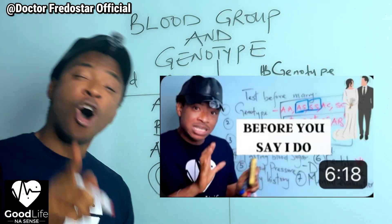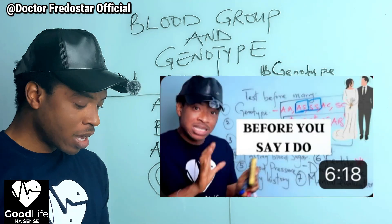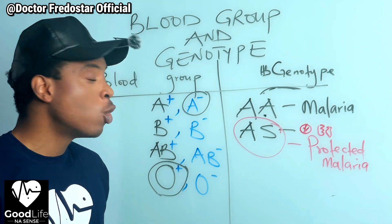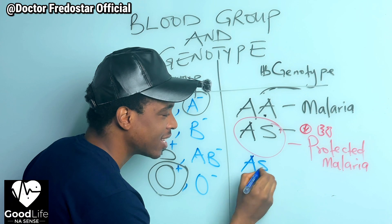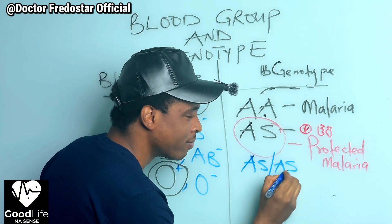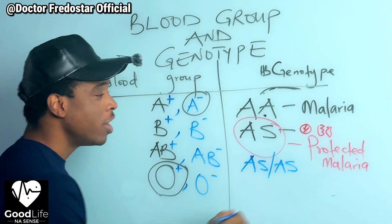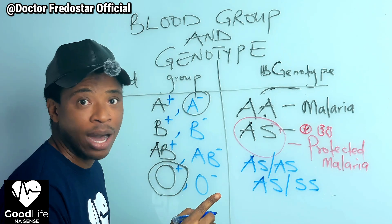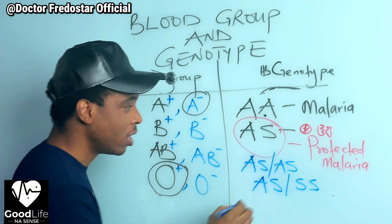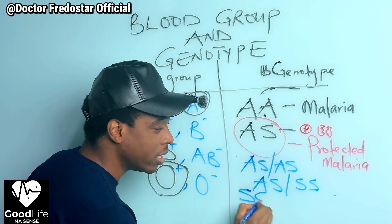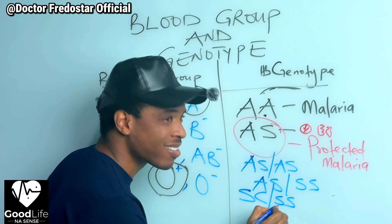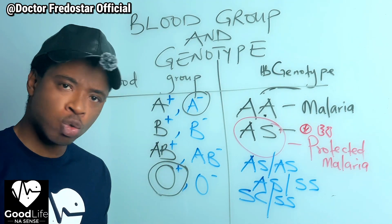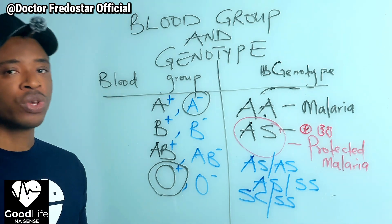Please go and check your genotype before you marry. Know your genotype. If you are AS and your partner is also AS, watch this video again. If you are AS, do not marry SS. If you are SC, do not marry SS. Do not open your eyes and jump into fire — you understand? You need to know this.